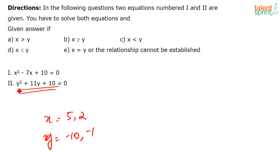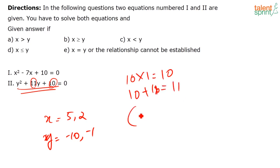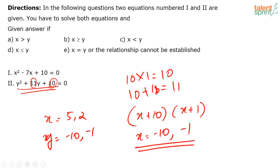The value of x is 5 and 2; the value of y is −10 and −1. For any value of x (5 or 2), y is always lesser than x, so x is greater than y. The answer is option A.